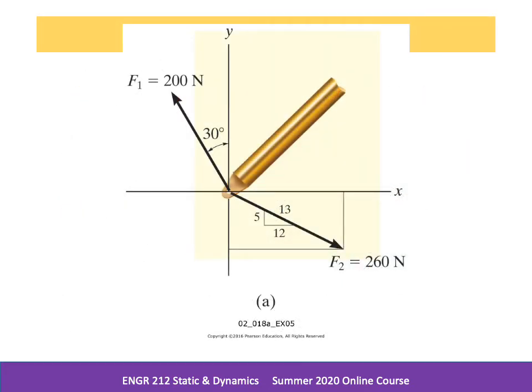In this example, we have two forces acting on a point: force 1 of 200 newtons at an angle of 30 degrees from the y-axis, and force 2 with a magnitude of 260 newtons. Its forces are broken down using the right-hand triangle method, where its hypotenuse is 13, its run along the x-axis is 12, and its rise along the y-axis is 5. From that information, we can break these forces F1 and F2 down into their component parts.